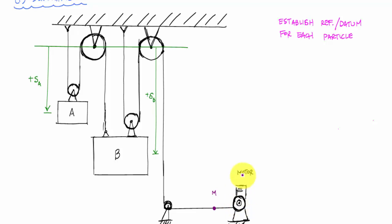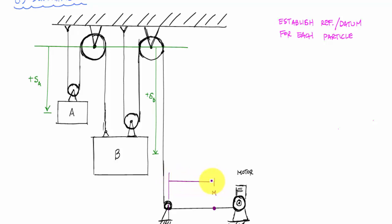For point M representing the motor, I'll choose the motor location itself as the datum. Since M moves left to right, I'll use a perpendicular reference. Whenever the point M moves in — gets drawn in by the motor — I'll call that a positive s_M.